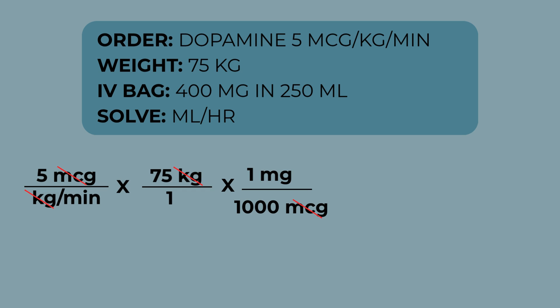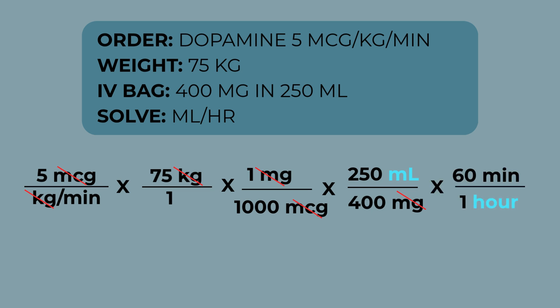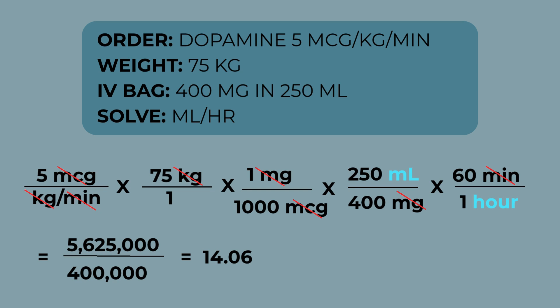Bring in the IV concentration next: 250 milliliters over 400 milligrams. Milligrams cancel. Then convert the time — 60 minutes over one hour. Minutes cancel out. Now you're left with milliliters per hour, the units you need. Multiply across the top, multiply across the bottom, and then divide. Round to the nearest tenth if your pump allows and you get 14.1 milliliters per hour.